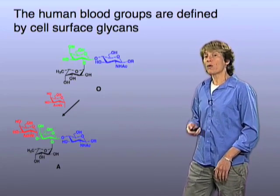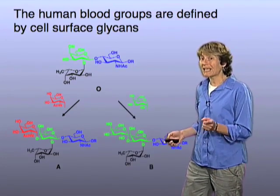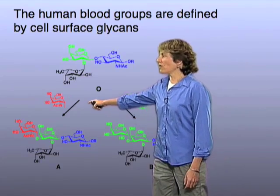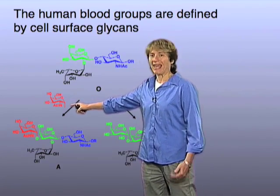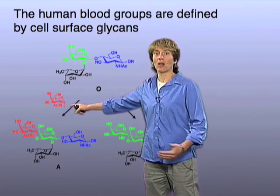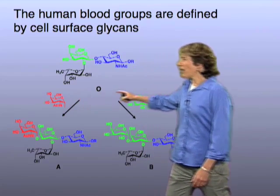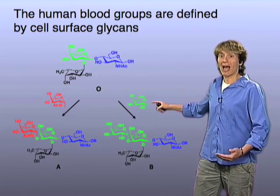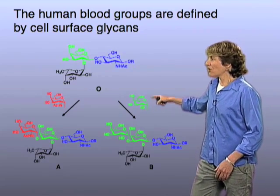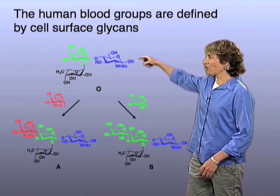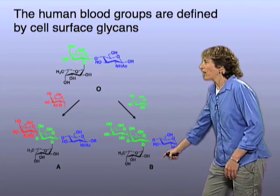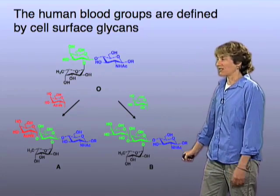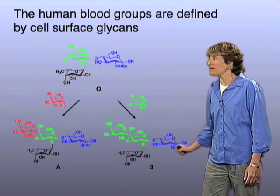Those of you who are blood type B have a slightly different enzyme. Instead of transferring this red sugar, which is N-acetylgalactosamine, your enzyme transfers the green sugar, which is galactose. When galactose is added to this trisaccharide, you get a tetrasaccharide which is slightly different — and this is the B tetrasaccharide. So those people are blood type B.